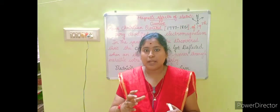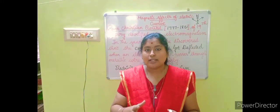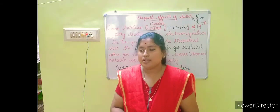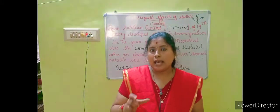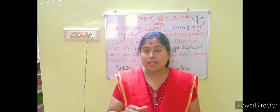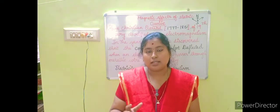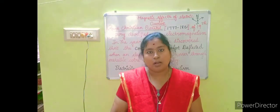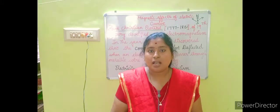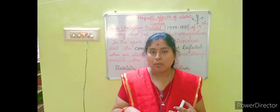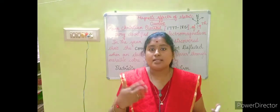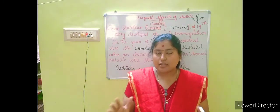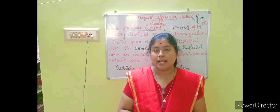Let me explain a small incident so this concept and invention will be clearer for you. What the scientist did was place a small copper wire near a compass. He passed electricity through the copper wire, and when the electric current started to move through this copper wire, the compass needle started to deflect — it began to get deflected by itself.